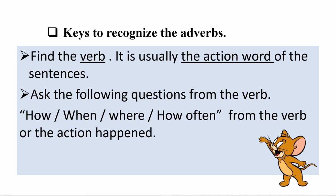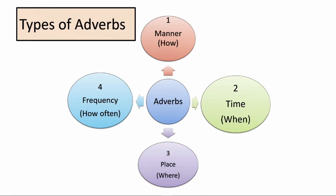Now I am going to tell you how to identify an adverb. First, find the verb — it is usually the action word of a sentence. Then ask the following questions from the verb: How does it happen? When does it happen? Where does it happen? Or how often does it happen? Now you can see a mind map on the screen showing the types of adverbs: adverbs of manner, adverbs of time, adverbs of place, and adverbs of frequency. In this lesson we are going to learn adverbs of manner and adverbs of time.